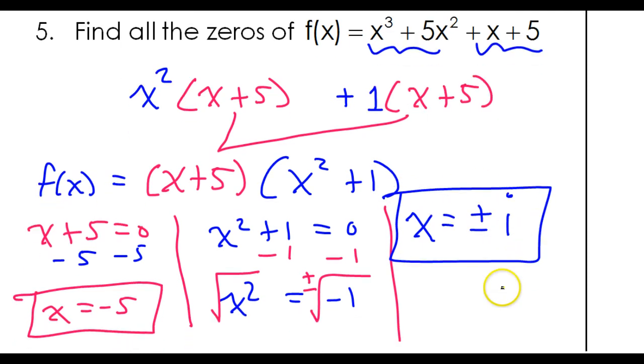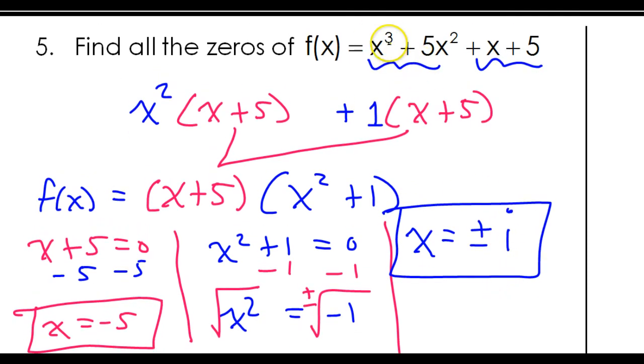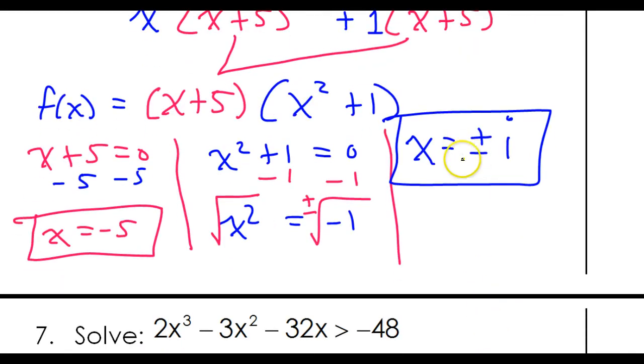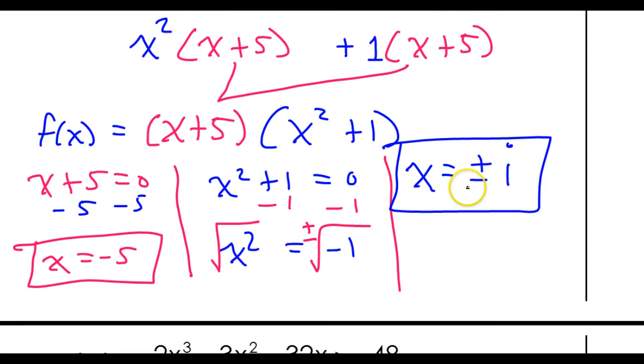Okay, now notice something here. If the degree is 3, that means there will be a maximum of 3 zeros, all right? A maximum of 3 roots. And so if I find 3, then I know I have them all for sure. And so here they are. There's 2 right here, positive i, negative i, and then the third one is negative 5.